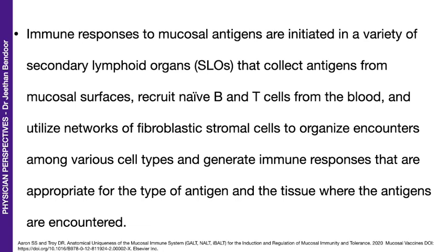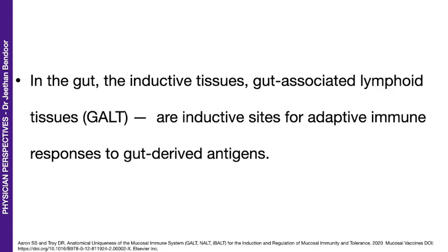To make an immune response possible to mucosal antigens, we have secondary lymphoid organs in the mucosal surface that collect these antigens, recruit B cells and T cells from the blood, and utilize stromal cells to organize encounters amongst these different cell types and generate an immune response appropriate for the type of antigen. Therefore, in the gut, the inductive tissues — or gut-associated lymphoid tissue, GALT — are inductive sites for adaptive immune responses to gut-derived antigens.